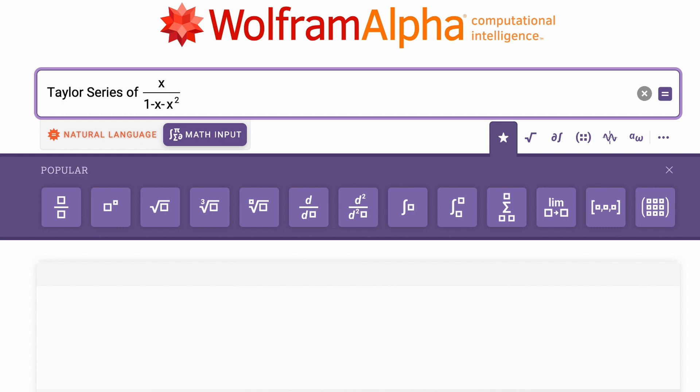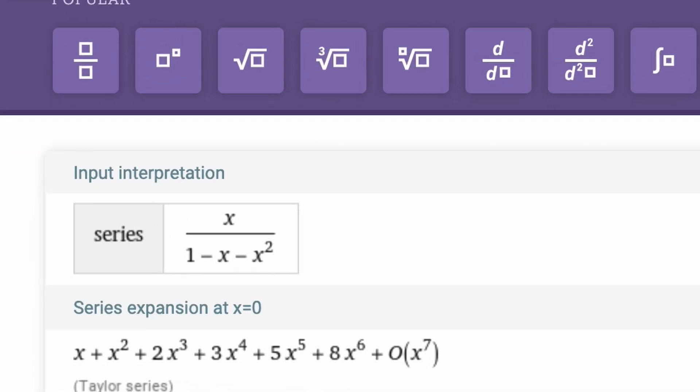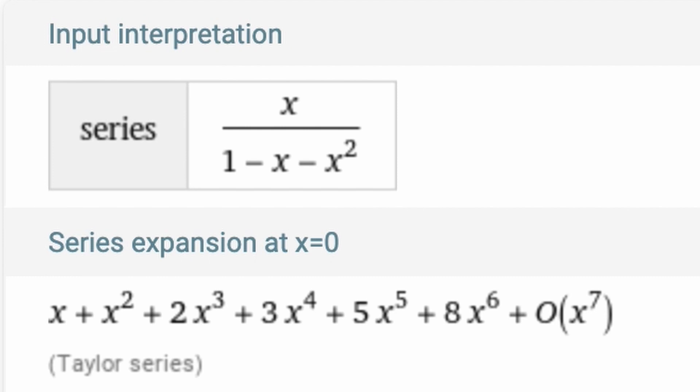Now, we have found the function we were looking for. If we find the Taylor series of this function, we see that we do get the terms from the Fibonacci sequence. Now, we just need a way to separate out the coefficients from the x's.